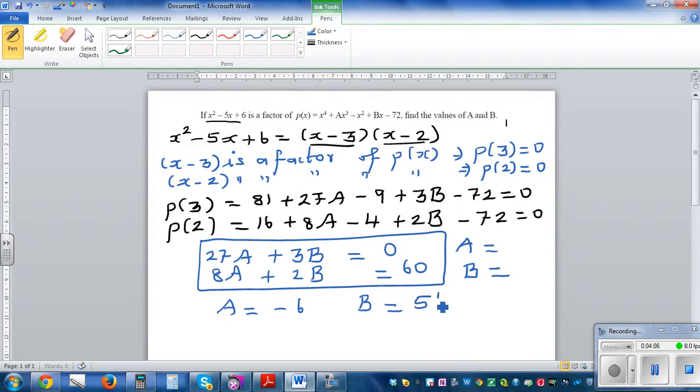It's good to check. Now how will you check your answer? What are we seeing? If A is minus 6 and B is 54, the roots would be 3 and 2.